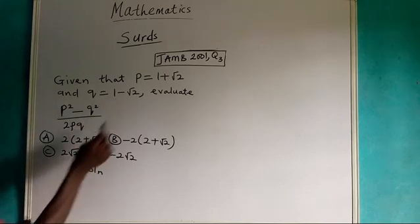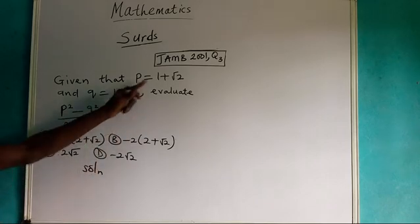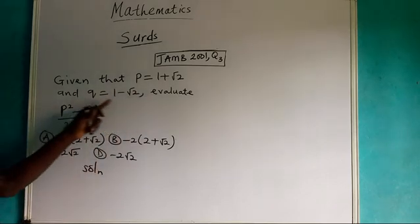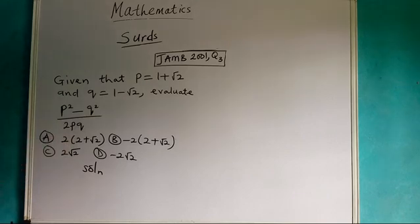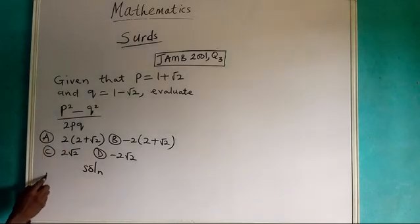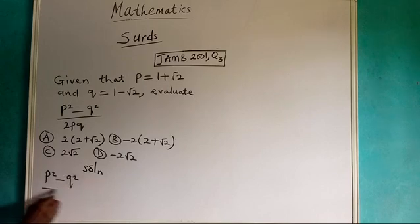We have P equals 1 plus root 2, and Q equals 1 minus root 2. Now we need to evaluate P squared minus Q squared, all over 2PQ.